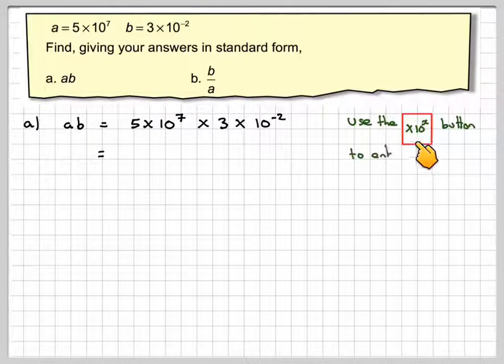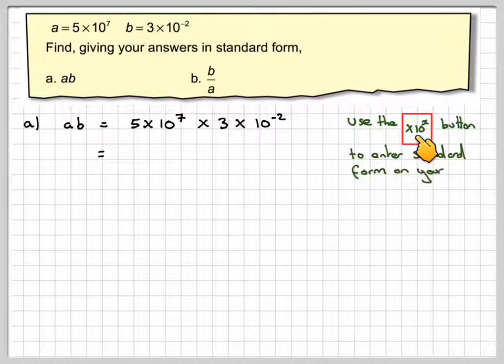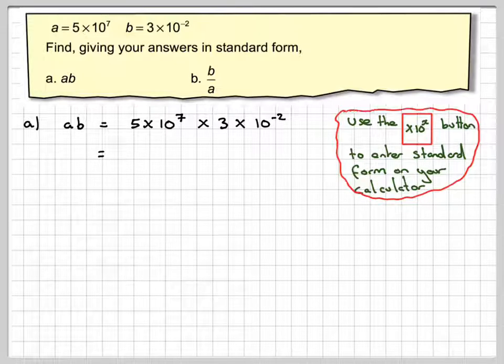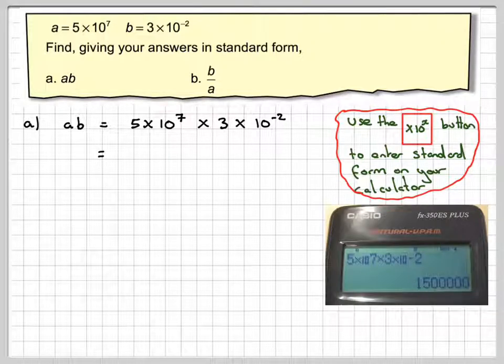And this on the new calculator looks like this: it looks A times 10 to the X. And on the old calculator it looks like EXP. So you need to write this in like this.